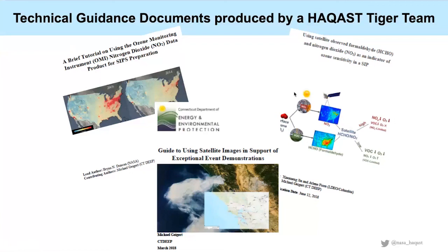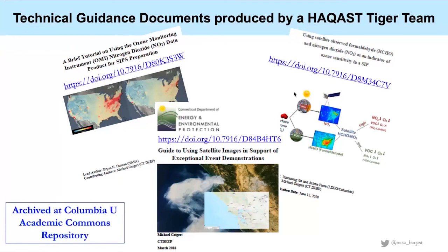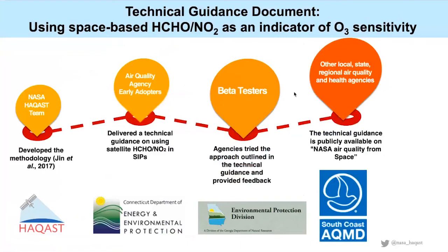We also provide some caveats and things to watch out for. We're pretty excited because all of these documents have been archived and assigned DOIs at Columbia University's Academic Commons repository. Before I get to the even more exciting part, I wanted to step through and explain the process we went through as part of this Tiger team to produce these technical guidance documents. Using the example of the formaldehyde-to-NO2 ratio — which can be used as an indicator of ozone sensitivity and is a major part of Xiaoming Jin's PhD thesis work — she has a paper from a few years ago that developed the methodology.